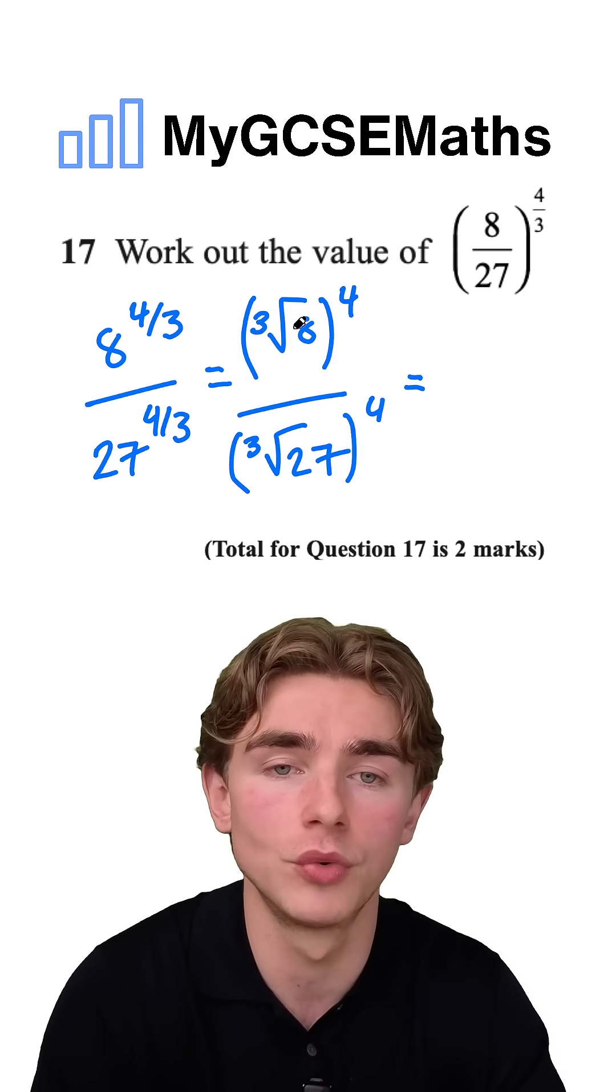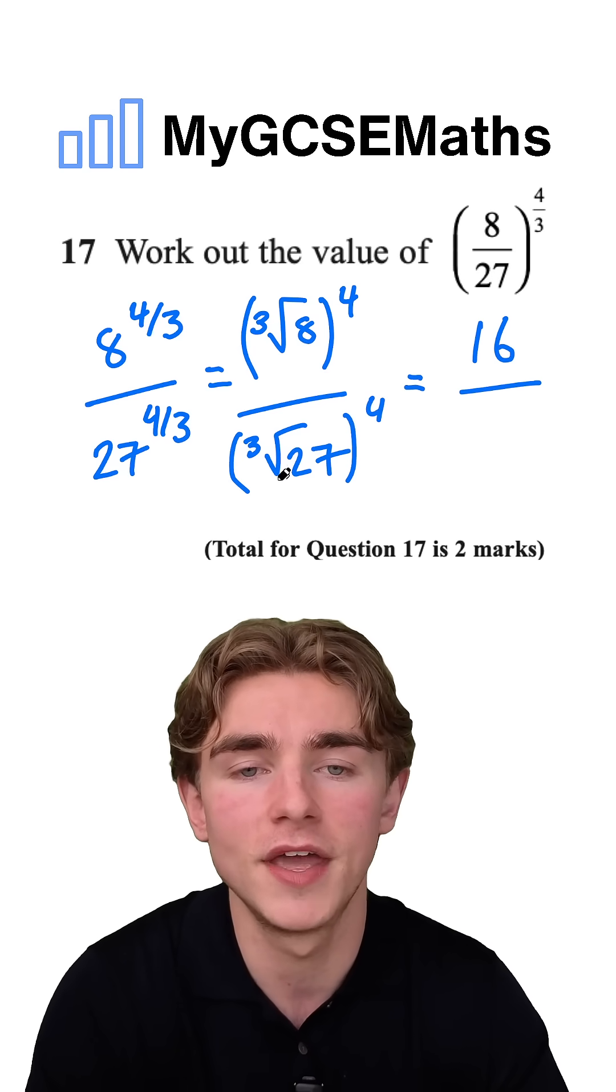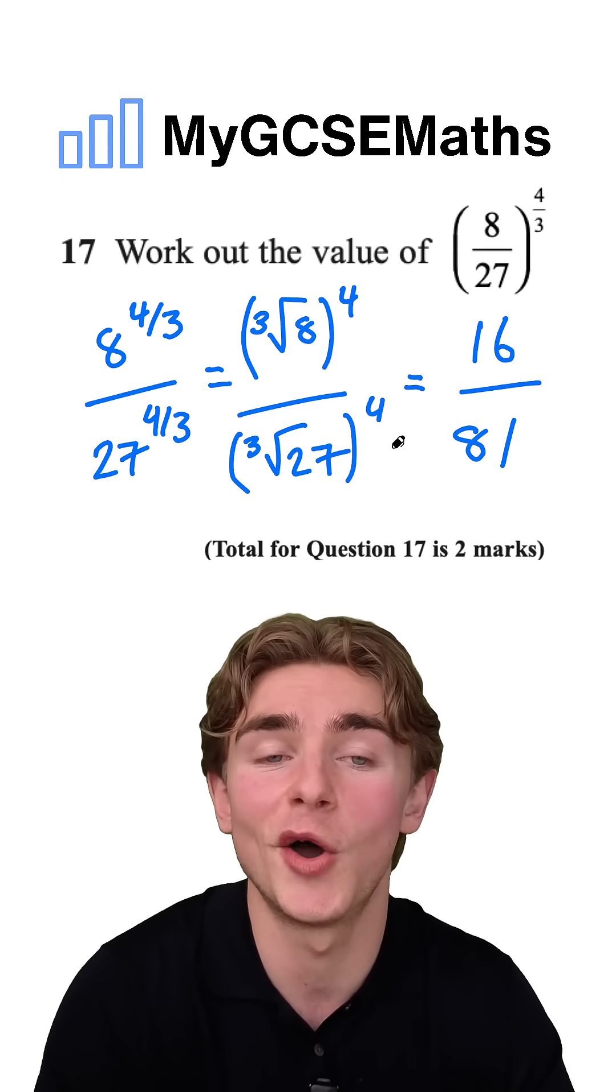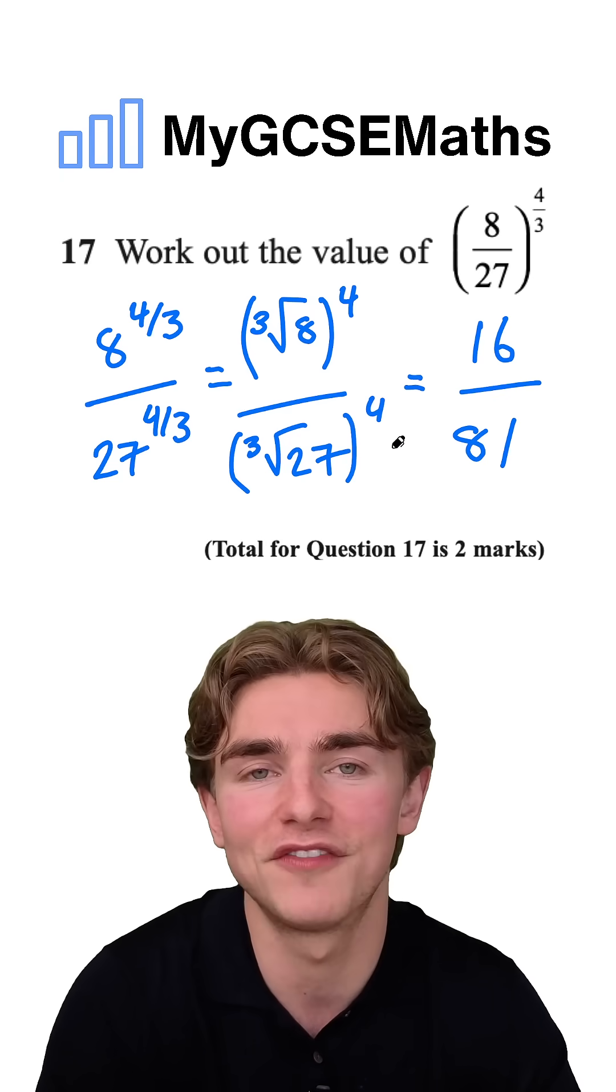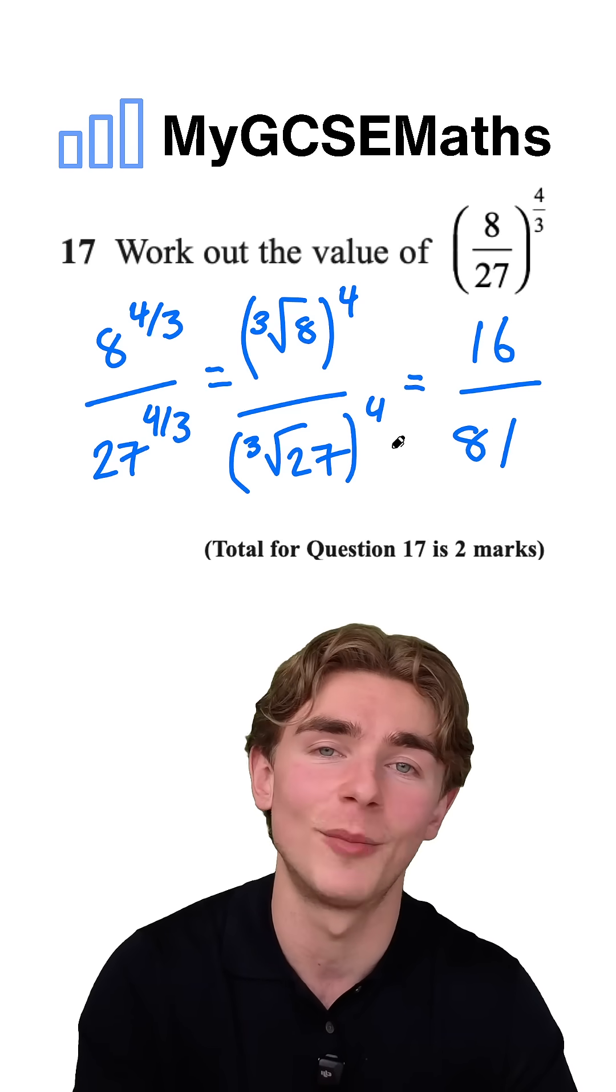What are these going to be, guys? Well, the cube root of 8 is 2. 2 to the power of 4 is going to be 16. And on the bottom, the cube root of 27 is 3. 3 to the 4 is going to be 81, giving us 16 over 81 as our fraction, guys. I did that last bit pretty quickly. If you have any questions, let me know in the comments.